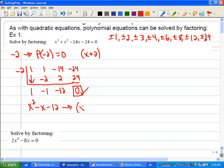So I end up with x squared minus x minus 12, which I can also factor to be x minus 4 and x plus 3. So what I can say then is x cubed plus x squared minus 14x minus 24 equals 0.